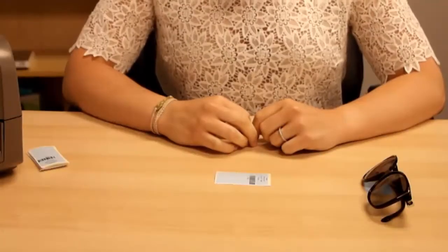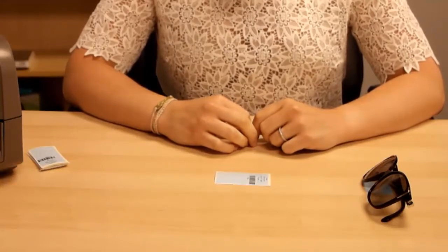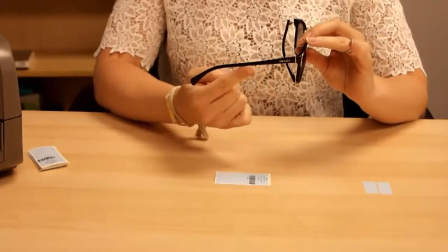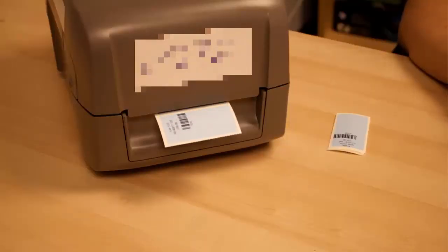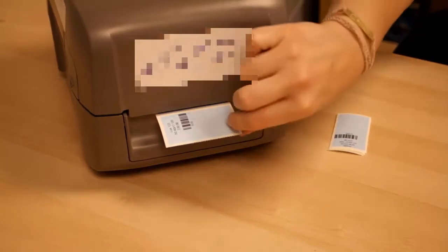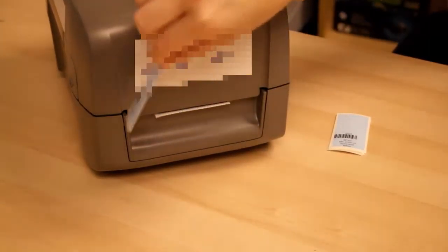The first method we will be showing you today is how to attach labels to frames with an average temple width, like this one here. Start by tearing the label from the printer upwards. Never pull it down, otherwise you risk decalibrating the printer.